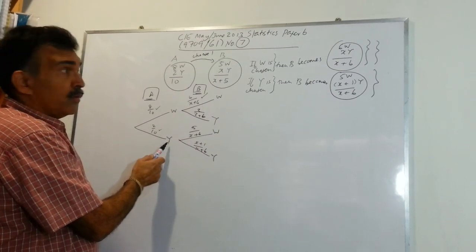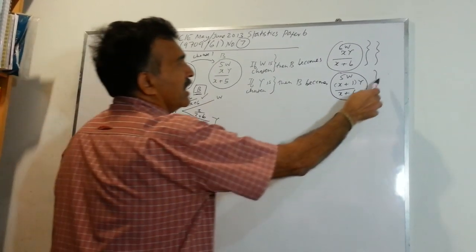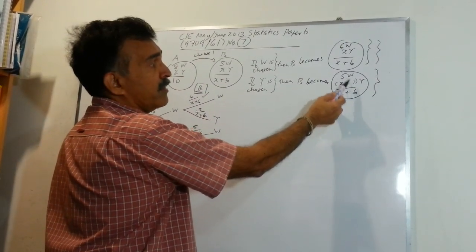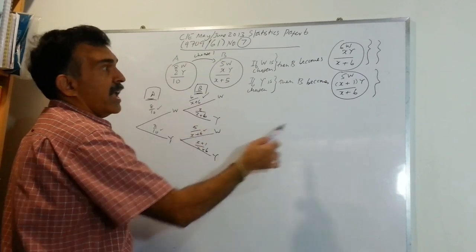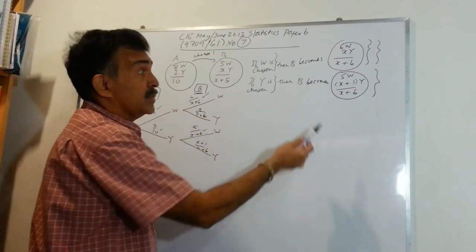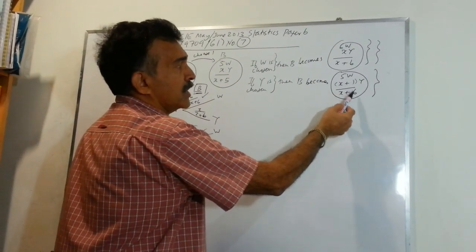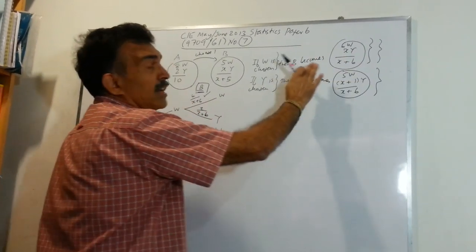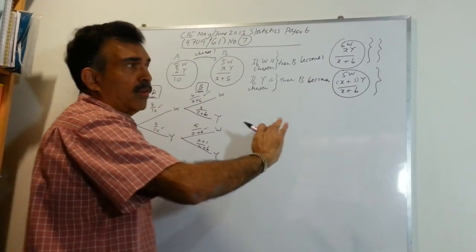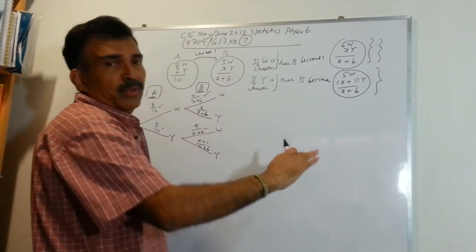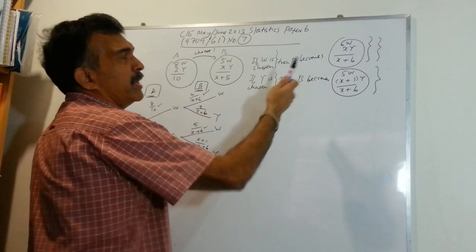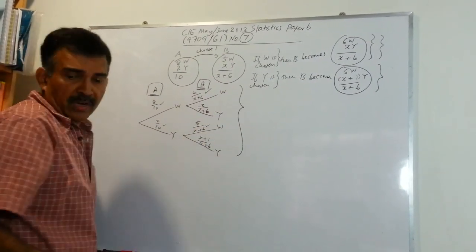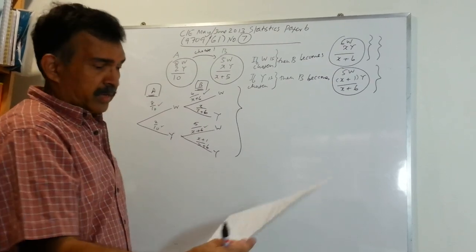Had you chosen a yellow from A, we are looking at the other box. The probability of picking a white from B now becomes five over X plus six, and the probability of choosing a yellow from B becomes X plus one over X plus six. Once you have this written out on a separate part of your solution page, you can pick up the probabilities very easily. We now have the whole tree diagram and have covered part A.